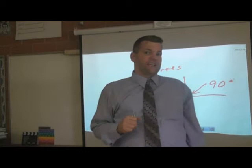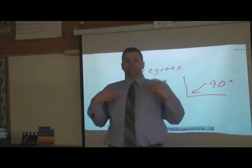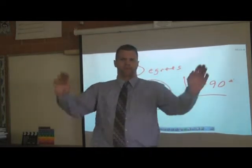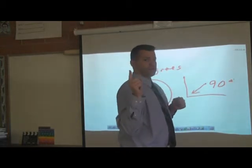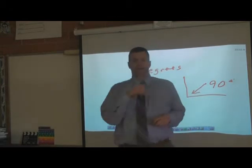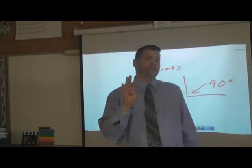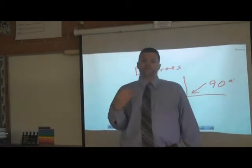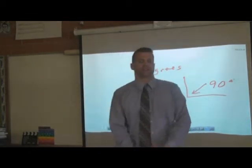Think about this: how many 90 degree turns can you make to equal 360 degrees? Let's try it here. 90 degrees. 90 degrees. 90 degrees. 90 degrees. It took four 90 degree turns to go completely around. As we know, one complete turnaround is a 360 degree turn.